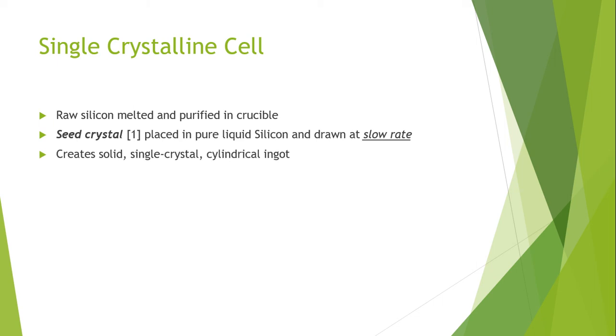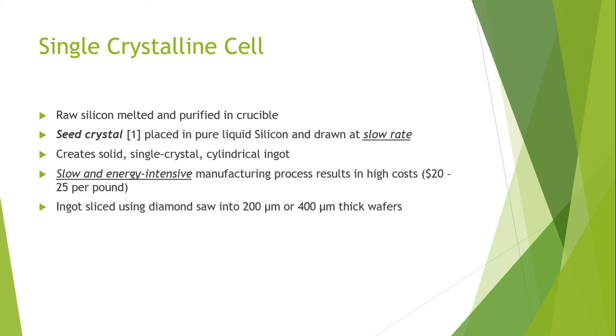Then a seed crystal is placed in pure liquid silicon and drawn at a slow rate, which creates a solid single crystalline cylindrical ingot. This slow and energy intensive manufacturing process results in higher costs, around $20 to $25 per pound.